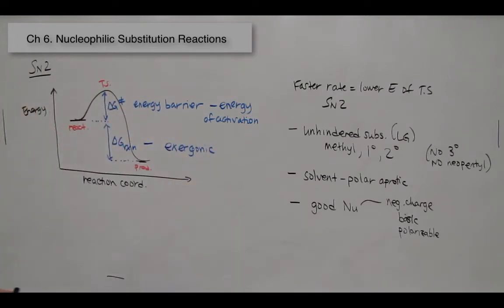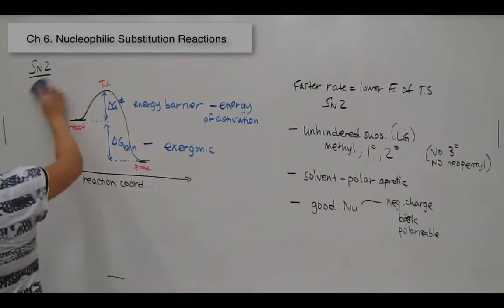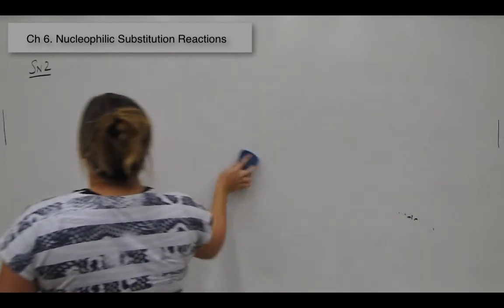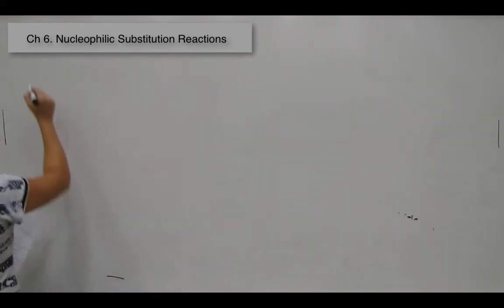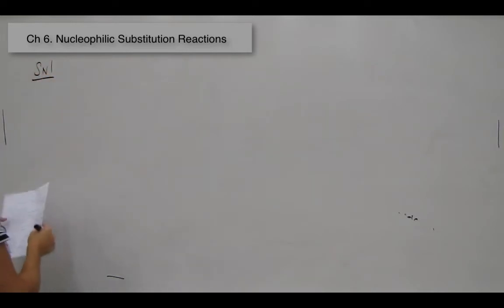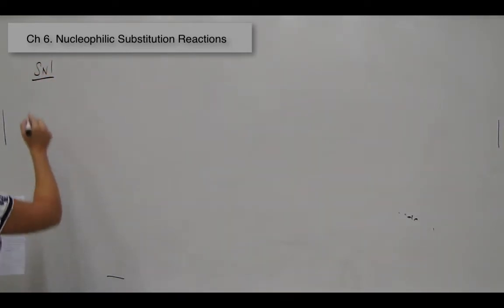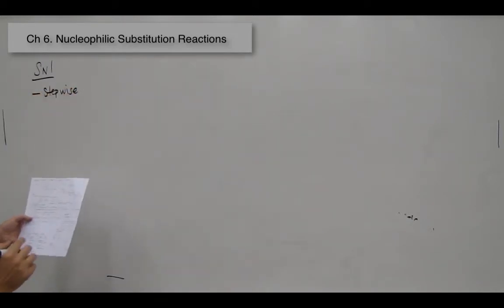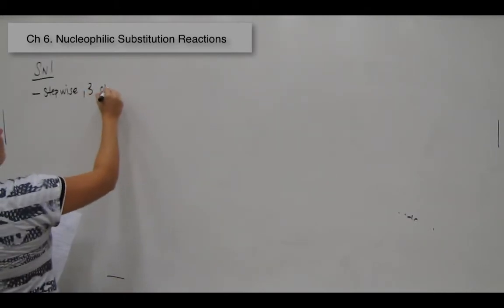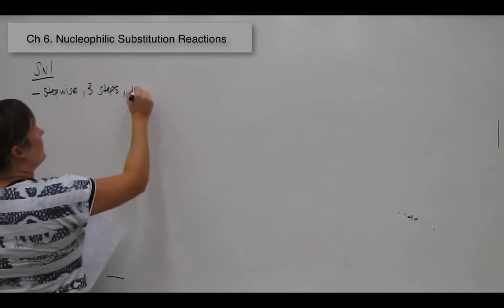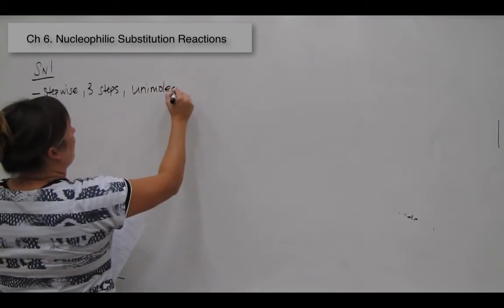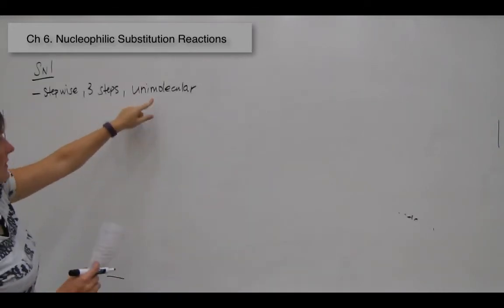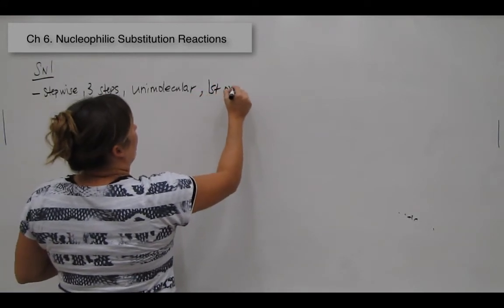Now let's talk about SN1 and go through the same reasoning. SN1 is stepwise — it occurs over three steps. It is unimolecular, meaning only one molecule is in the slow step that determines the rate. And it is first order.